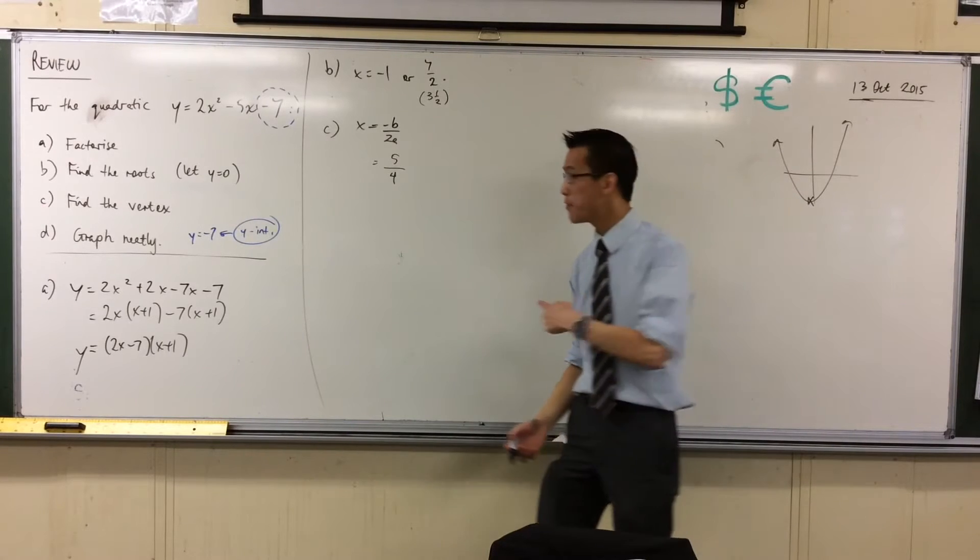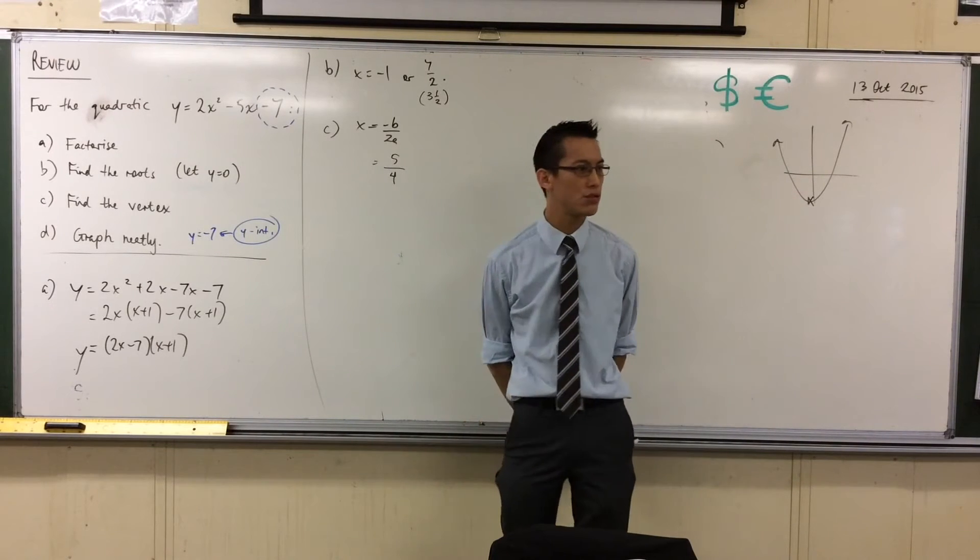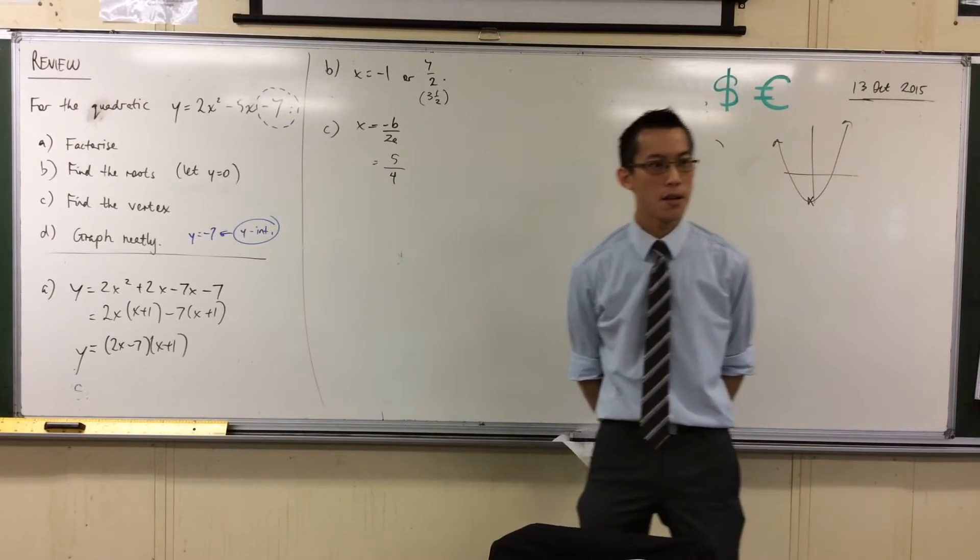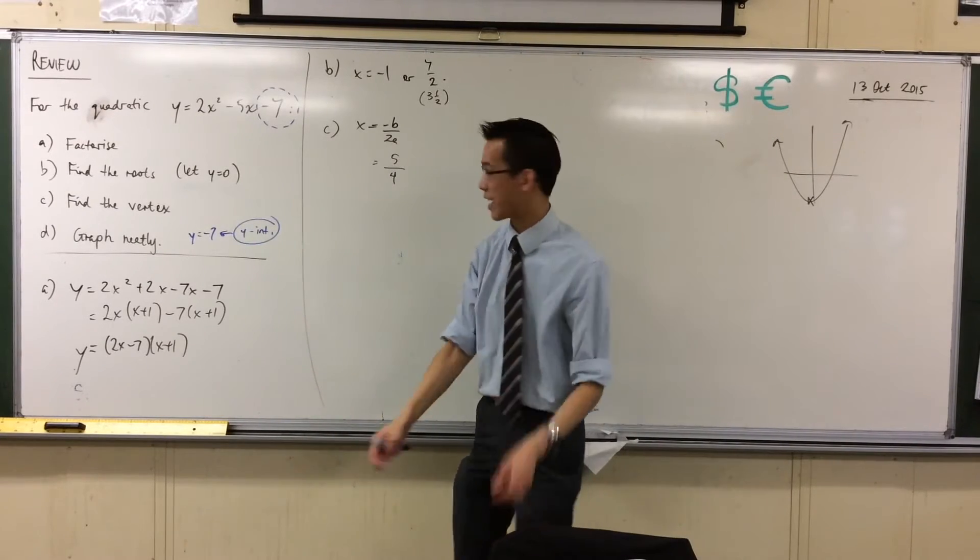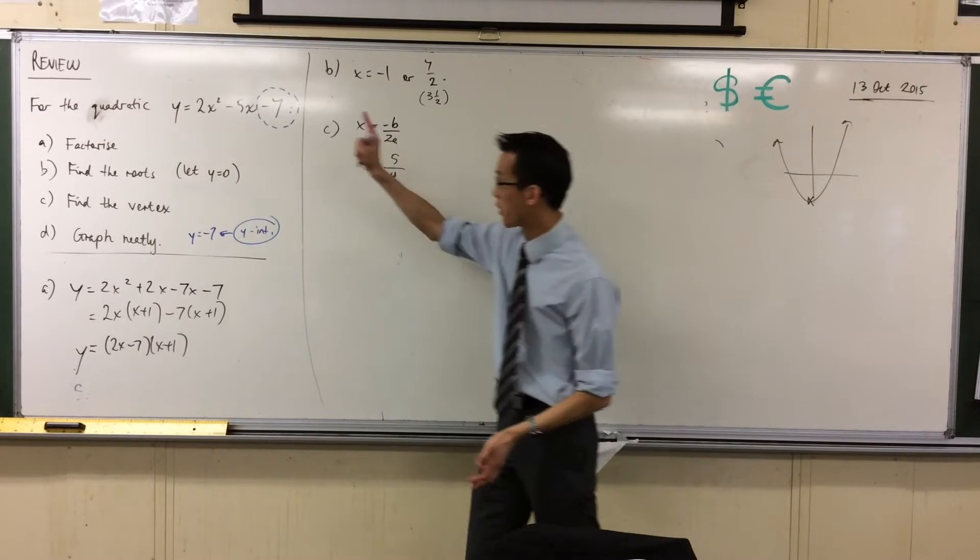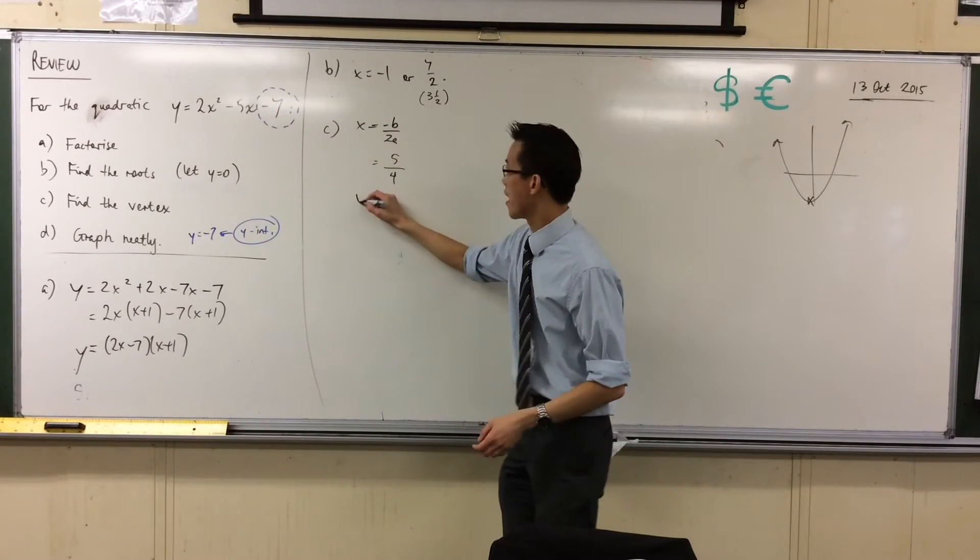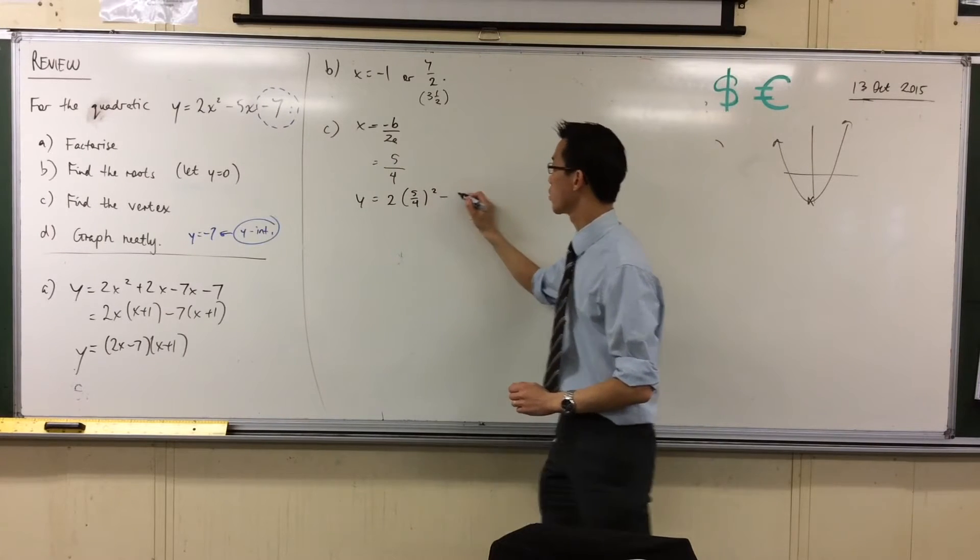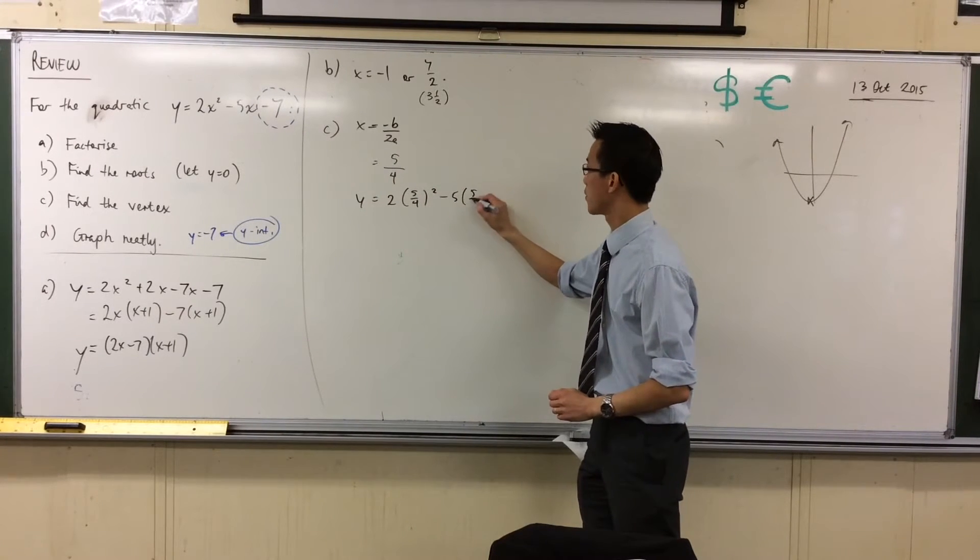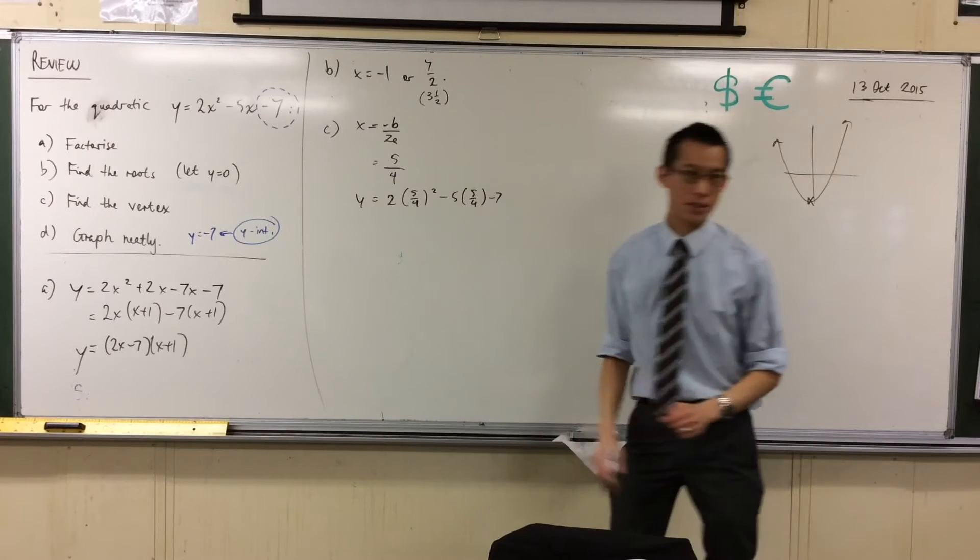Okay, there's an x value, and I pop that back into, what do I pop it into to get a y value? In that equation. Yeah, the original equation. Try to be as specific as you can, because I have lots of equations flying around. I want that one, okay? So, I'm going to go ahead, and let's see. So, I've got 2, 5 over 4 squared, 5 times 5 over 4, minus 7. Okay?